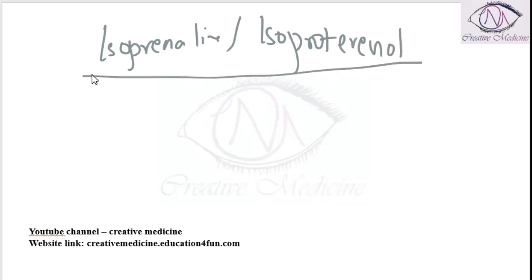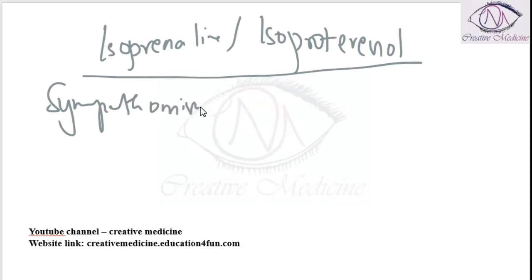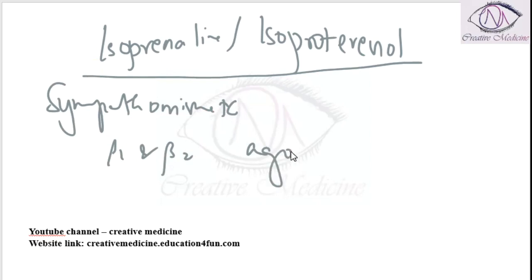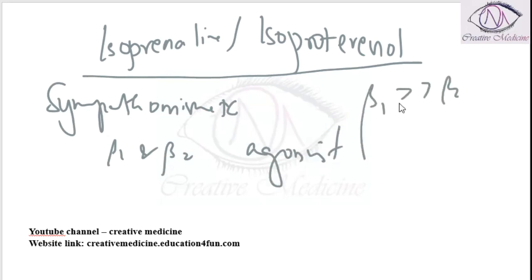Isoprenaline or Isoproterenol is a pure sympathomimetic. It is a beta-1 and beta-2 agonist. Its action on beta-1 is more than beta-2.